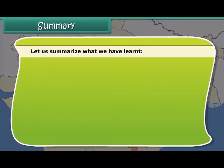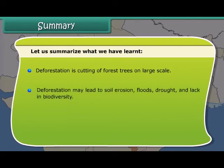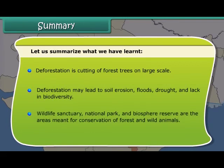Let us summarize what we have learned. Deforestation is the cutting of forest trees on a large scale. Deforestation may lead to soil erosion, floods, drought, and loss of biodiversity. Wildlife Sanctuary, National Park, and Biosphere Reserve are the areas meant for the conservation of forests and wild animals.